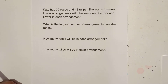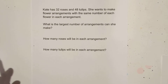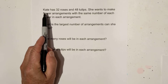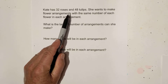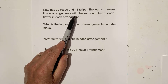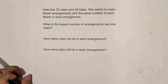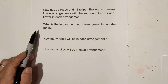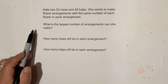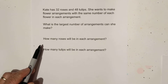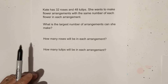Welcome to Moo Moo Math and Science. In this video, let's work on word problems that are solved using the greatest common factor. Kate has 32 roses and 42 tulips. She wants to make flower arrangements with the same number of each flower in each arrangement. What's the largest number of arrangements she can make? How many roses will be in each arrangement and how many tulips?